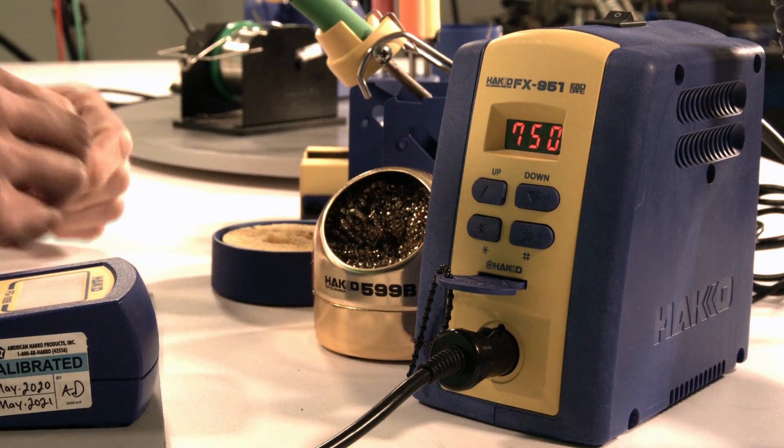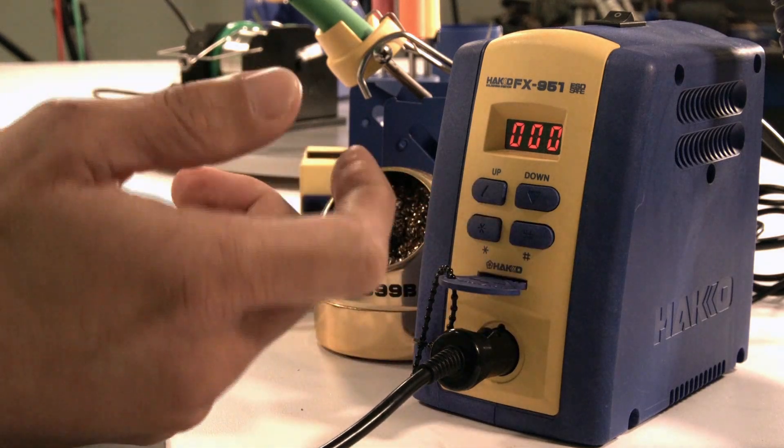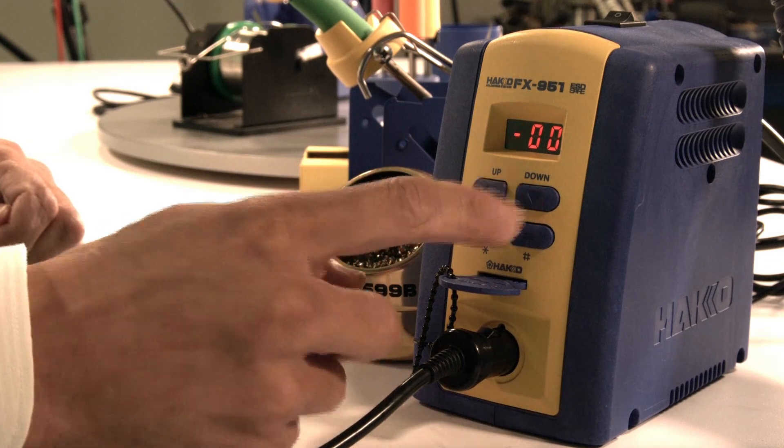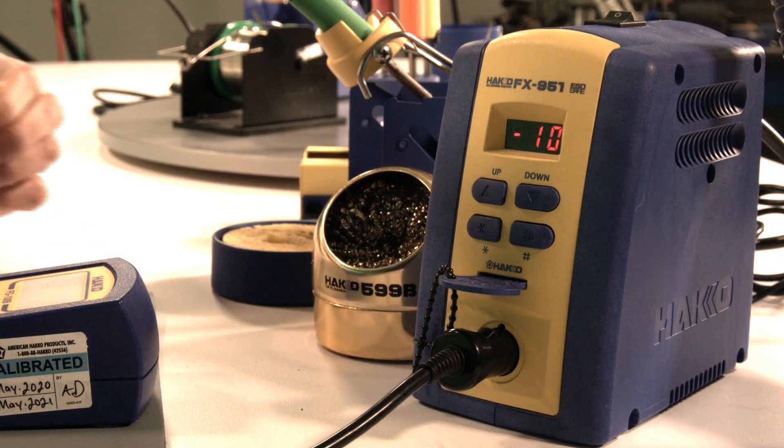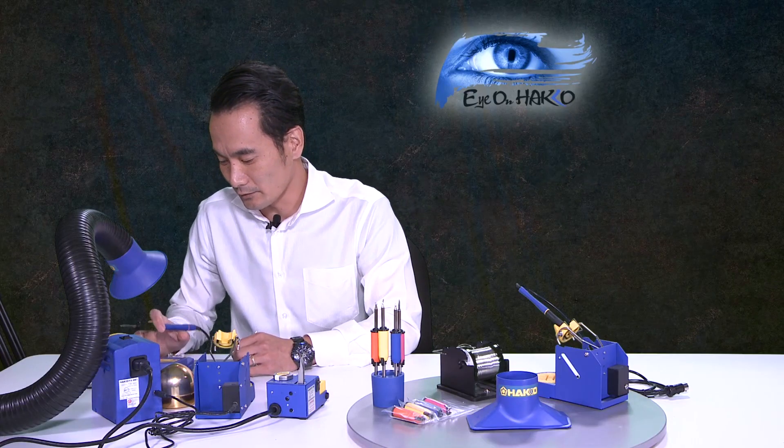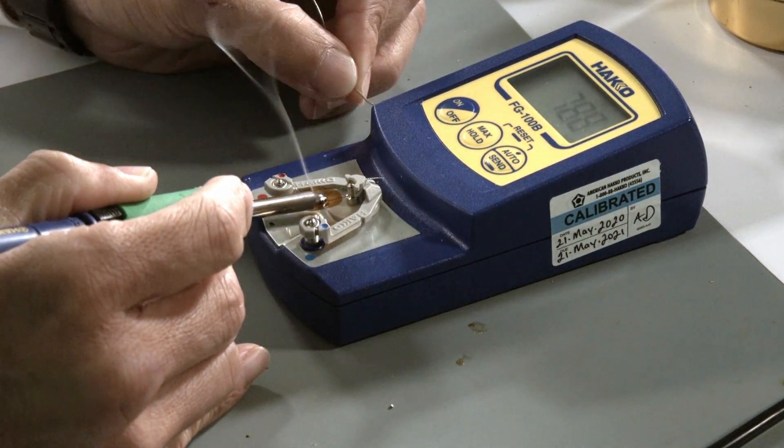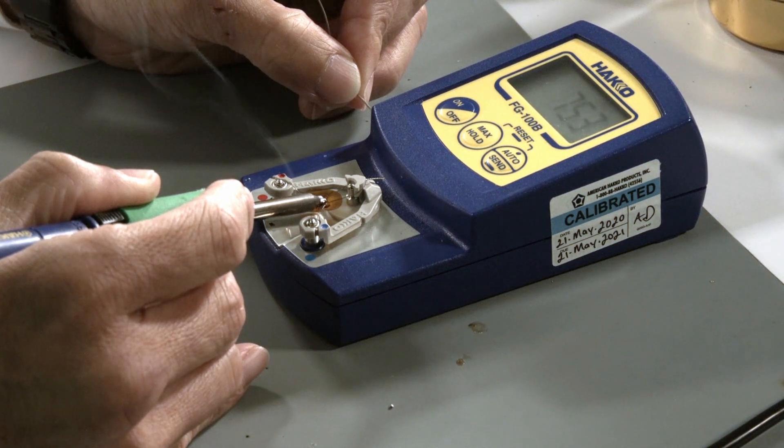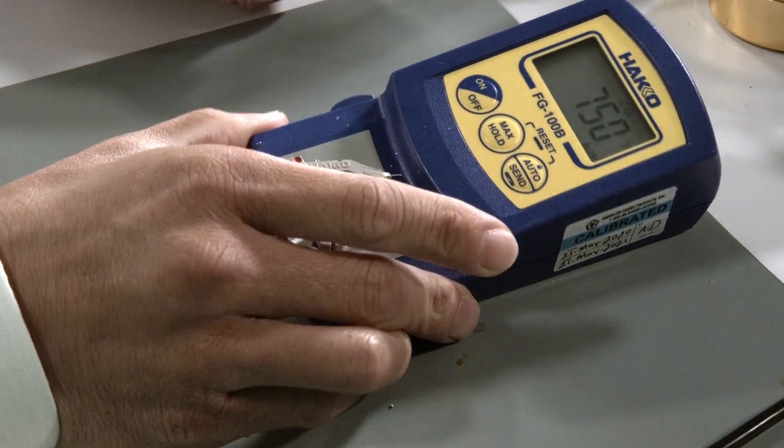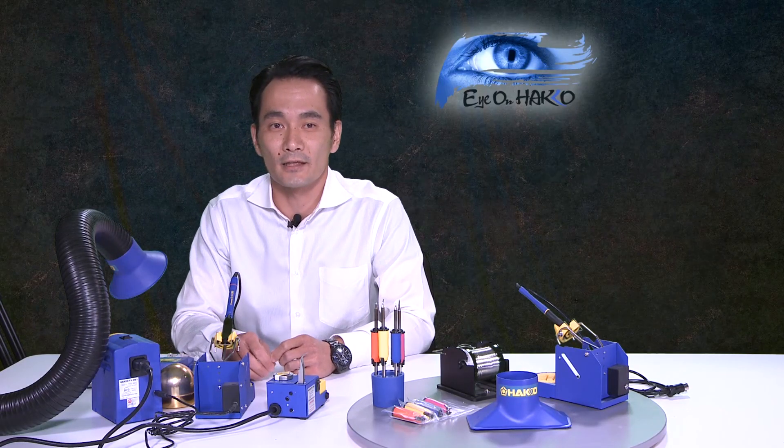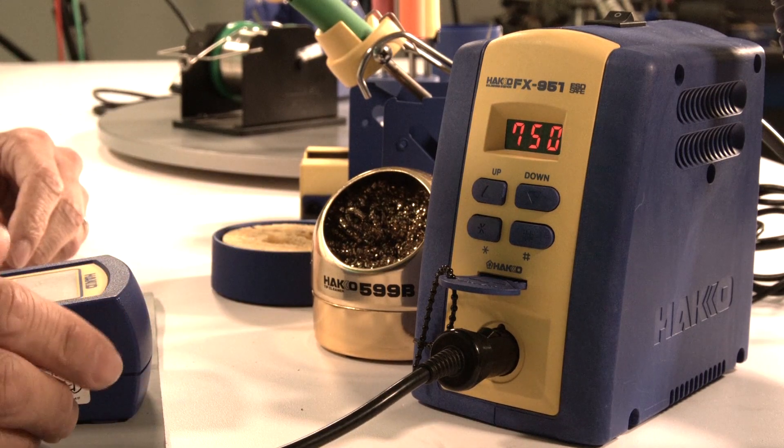The display on the station reads 750. The difference is 15°F. That's well within the temperature range of the T15 series tips, which fall within plus or minus 27°F right out of the package. But say you need to get it within a tighter tolerance. Then that's when you use this offset button. Right now it's at zero offset. If I press and hold it, you get access to the controls. I'll drop the temperature 10°F, hit enter and enter again.